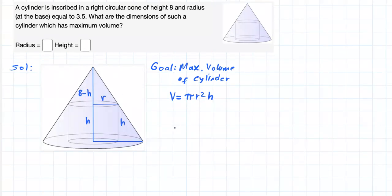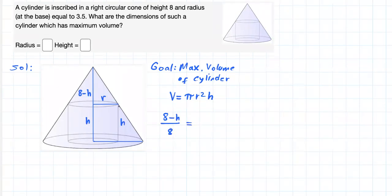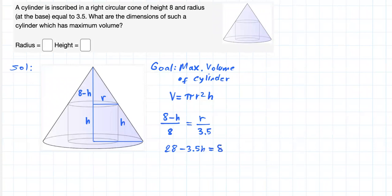Now, notice this small triangle and this right triangle — no matter how you design this cylinder, they should be similar. So (8 minus h) divided by 8, the height of the small triangle over the height of the big triangle, is equal to r over 3.5, the base of the small triangle over the base of the big triangle. Cross multiplying, we get 28 minus 3.5h equals 8r.